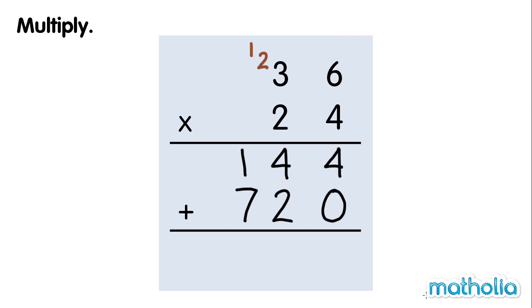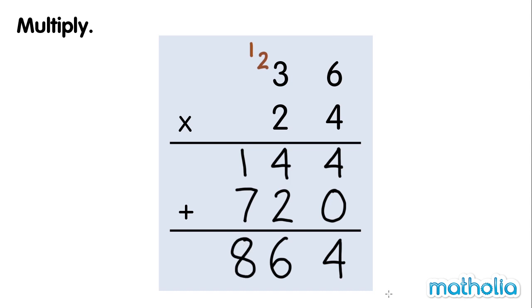Now we add the results. 4 ones plus 0 ones equals 4 ones. 4 tens plus 2 tens equals 6 tens. 100 plus 700 equals 800. So 36 times 24 equals 864.